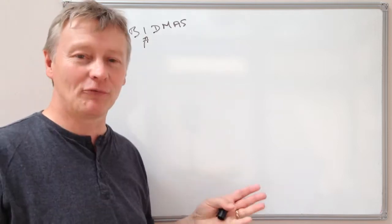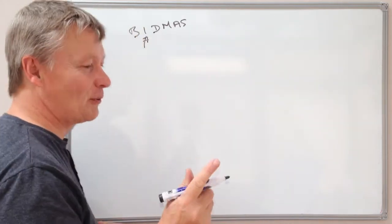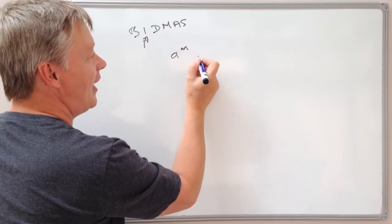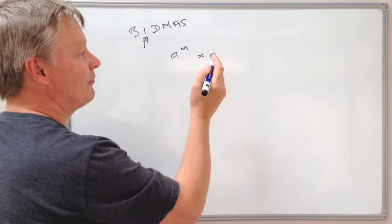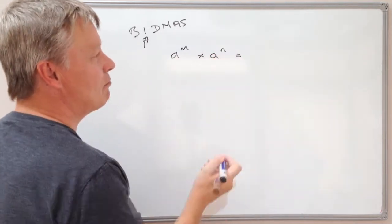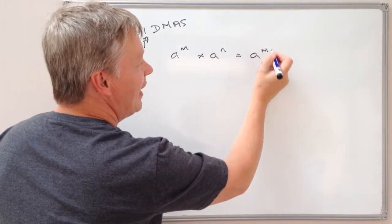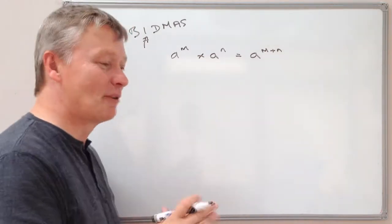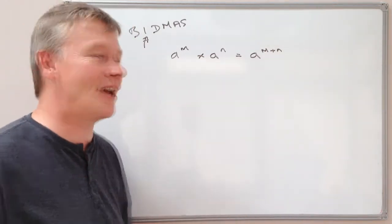There's three main rules that you have to remember with indices. The first one is that something to the power of m, multiplied by something to the power of n, means that it would be a^(m+n). That doesn't make any sense really, but let's put that in a real practical example.